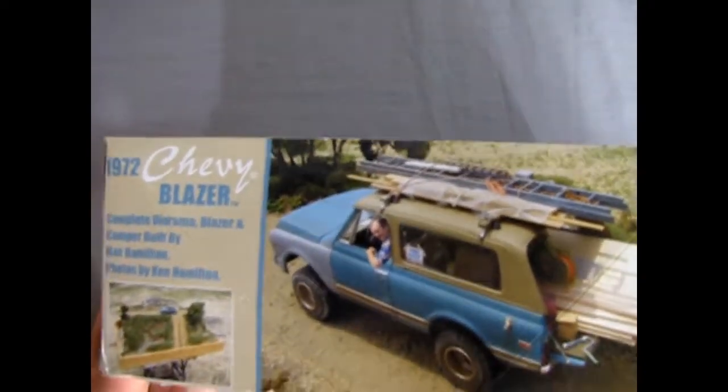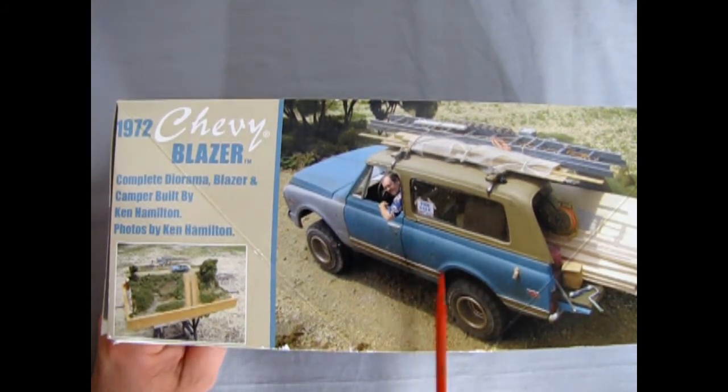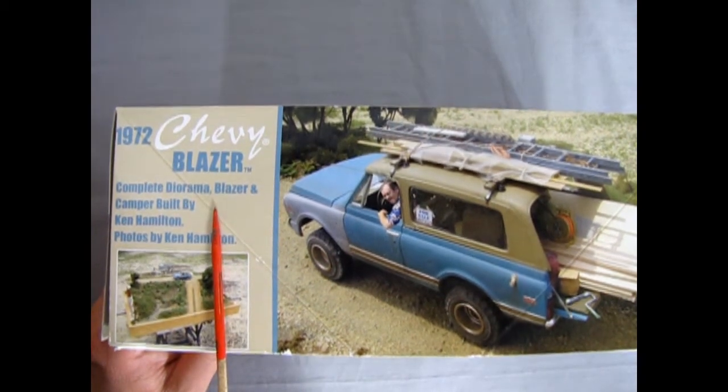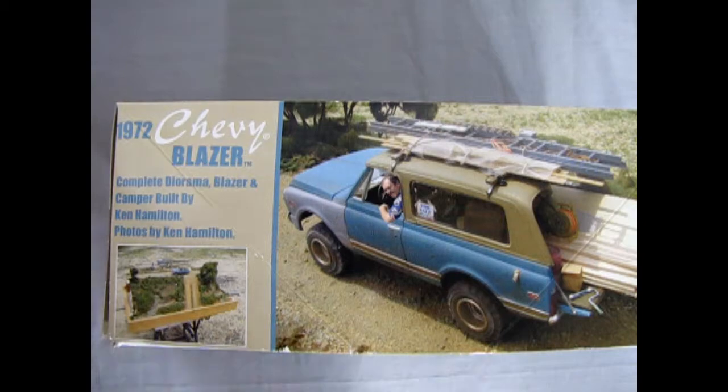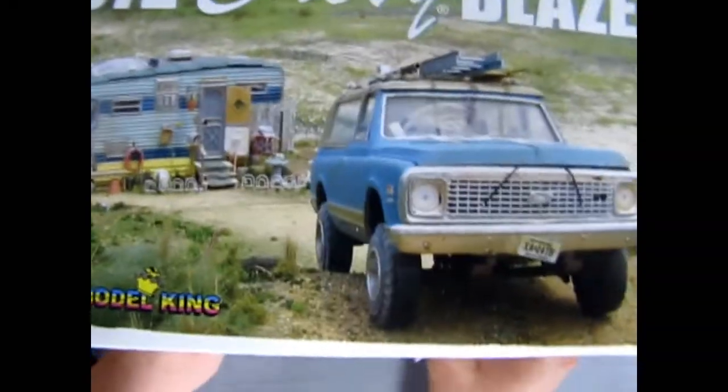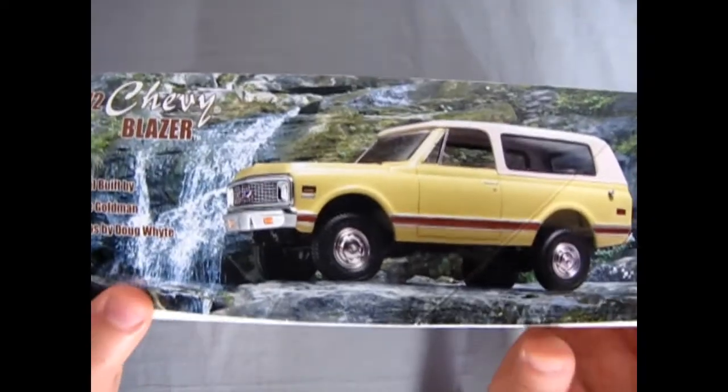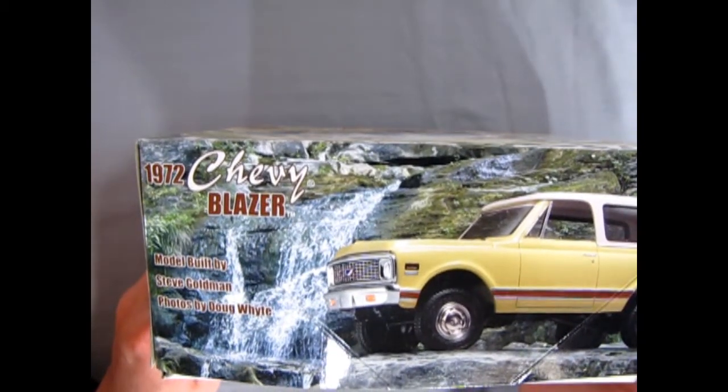So if we turn it up on the side, we can see this sort of interesting photograph. We've got like a real person integrated into a model kit. So, complete diorama, blazer and camper built by Ken Hamilton. Photos by Ken Hamilton. So this is kind of a cool little thing off the side. Here's an idea of sort of what you could make, given the right amount of stuff. Some pretty cool looking pictures of all this, out in the rugged country. There's the stock version of the blazer, as you can see, pretty nice. Model built by Steve Goldman. Photos by Doug White. Pretty cool stuff on this box.